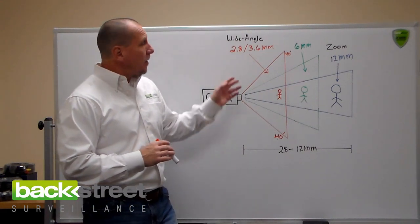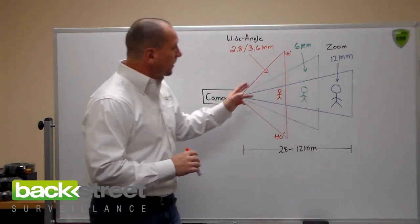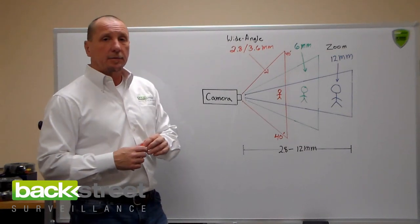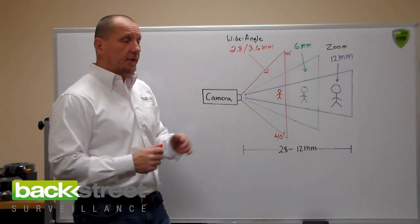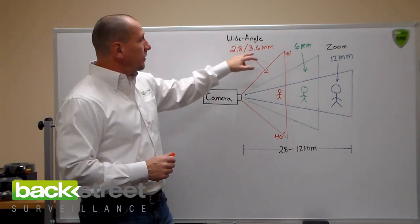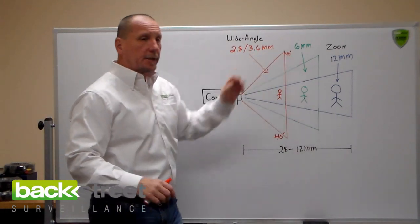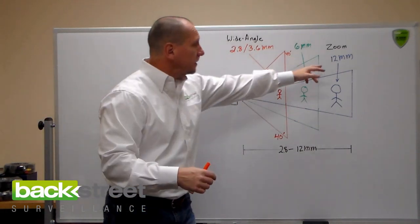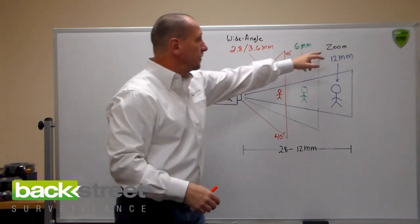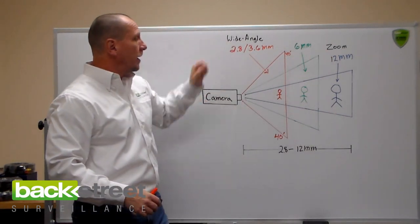Now I've drawn this drawing up here that represents the most common lenses used in video surveillance. 2.8 and 3.6 are wide-angle lenses, 6mm is a mid-range lens, and then 12mm is a zoomed-in view. So that's zoomed in and this is wide-angle.